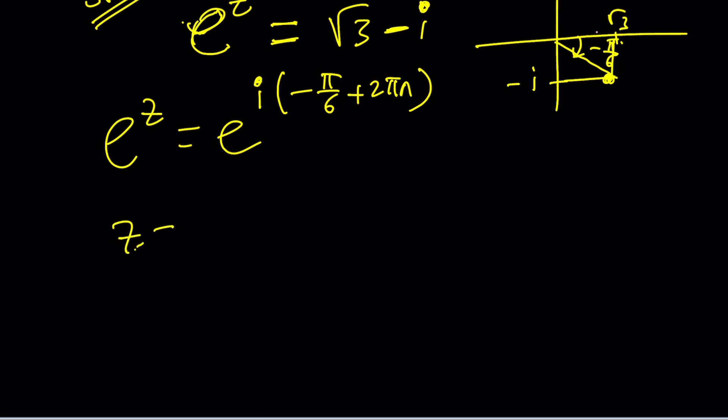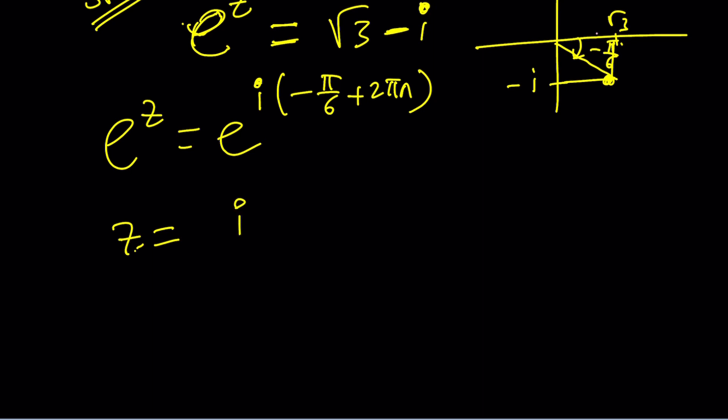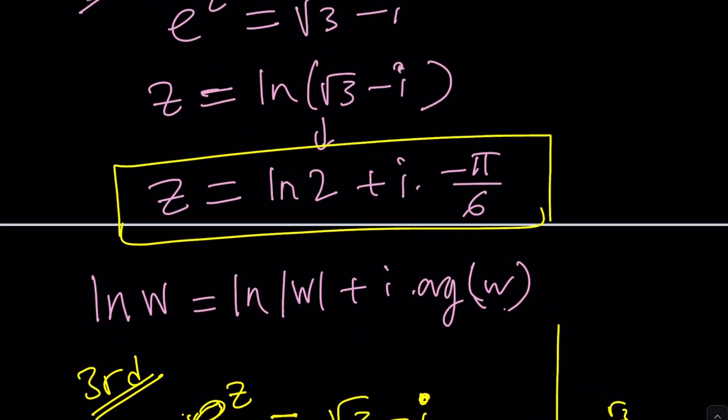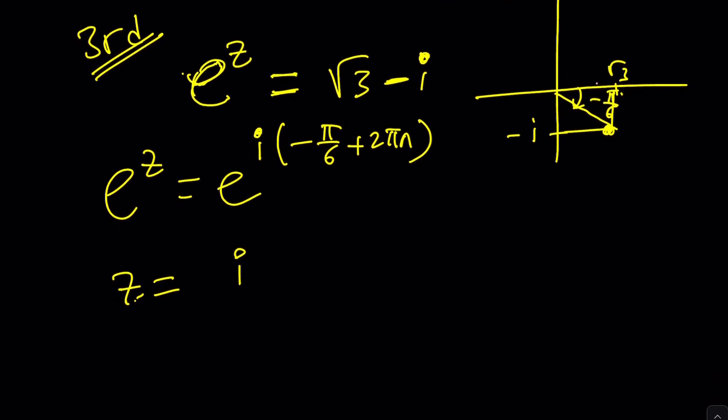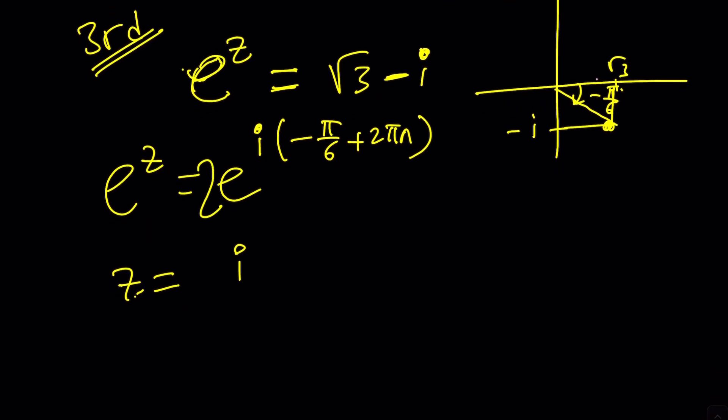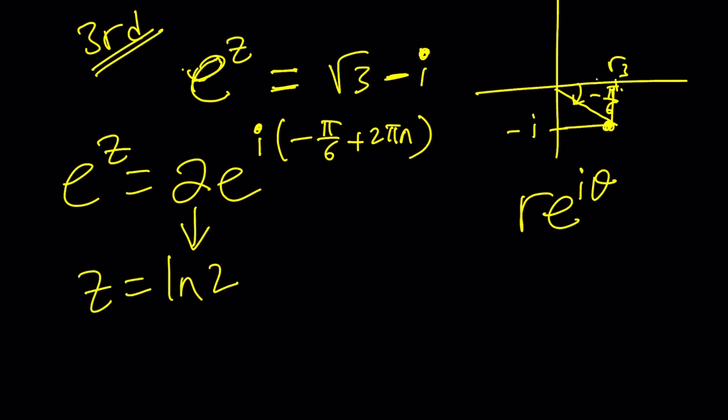Cool. Now, from here, we get z equals i times... Did we do the right thing? Oh, we forgot something, of course. I forgot the two, yes. That's why. I'm like, what is going on here? I'm getting something else. We forgot the r. So we were supposed to write r as r times e to the i theta. I forgot to write the r, which is two in this case. And then doing the natural logs on both sides, we're going to get z equals ln two plus i times negative pi over six plus two pi n.